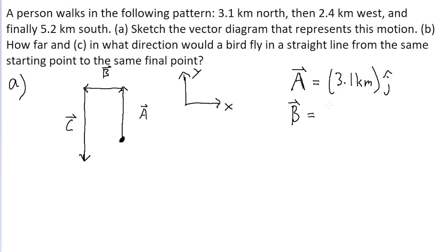Vector B has a magnitude of negative 2.4, negative because it's pointing to the left in the negative x direction. This time with the i-hat unit vector because i is typically the unit vector used for horizontal motion or the x-axis. And vector C is negative 5.2 kilometers with the j-hat unit vector.